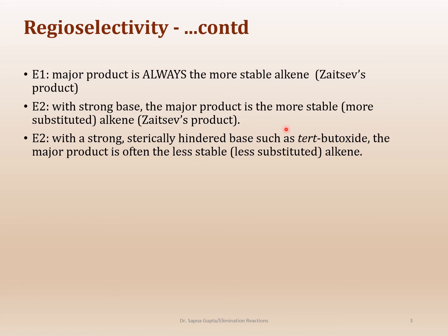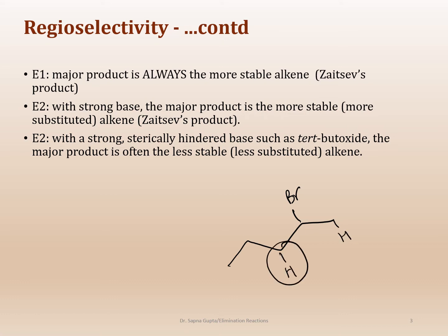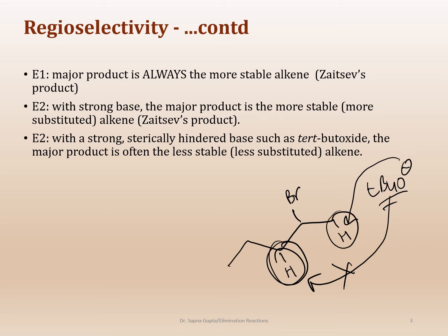In E1, it's always going to be the most stable alkene. With E2, there are some additional things to look at. For example, if you have a substrate where this is bromine, this is a beta hydrogen that is a little bit more sterically hindered. If you start using something like t-butoxide, which is a really bulky base, it's not going to be able to access this sterically hindered hydrogen. This bulky base is going to go only for the less hindered hydrogen. If it goes only for that hydrogen, then the only alkene you will get is the terminal alkene, which is the Hofmann product.